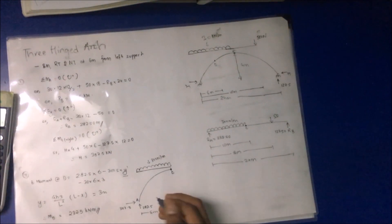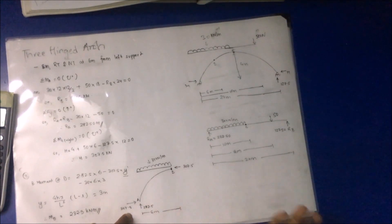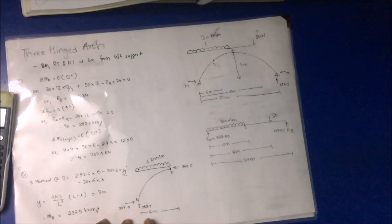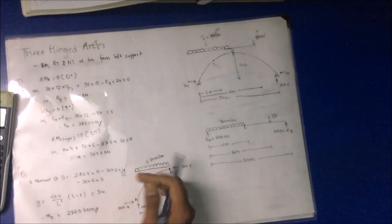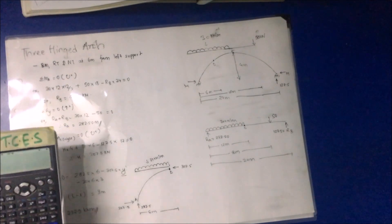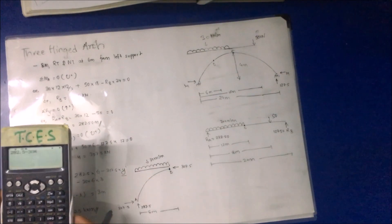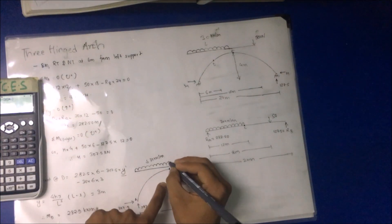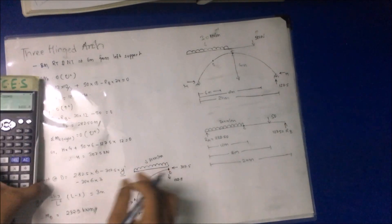The net horizontal force at this section is H = 307.5 kN. For the net vertical force V: RA = 282.5 kN upward and UDL = 30 × 6 = 180 kN downward, so V = 282.5 − 180 = 102.5 kN (acting downward).